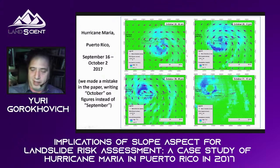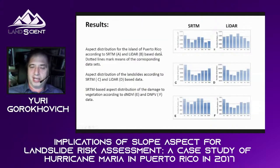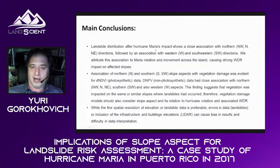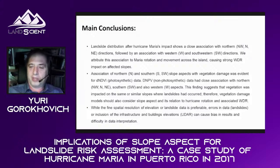We took the landslide data, overlaid it with aspect using both SRTM and LIDAR. On the SRTM data, you see a lot of landslides associated with north, north-east directions, and also south-west — two main directions visible. The LIDAR data tells more or less the same story. Conclusion: after Hurricane Maria's impact, we see a close association with the northern direction, followed by association with western and south-western directions. We attribute this to Maria's rotation and movement across the island, which caused strong wind-driven rainfall impact. There is also a conclusion about vegetation, which you can read in the paper.